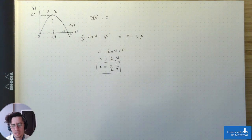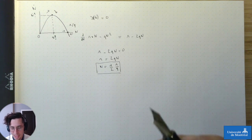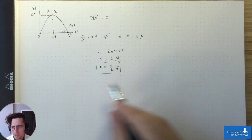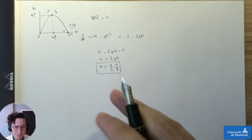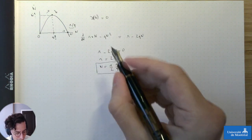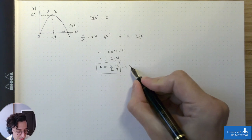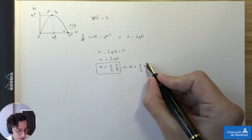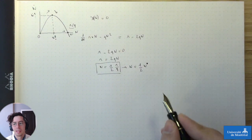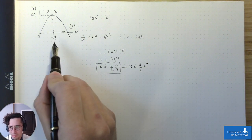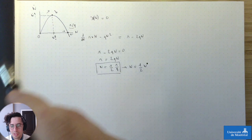Là, c'est le moment où on se dit : r/q, on connaît, c'est l'état d'équilibre n*. Donc on peut écrire que la croissance est maximum quand n = n*/2. Ce qu'on sait maintenant, c'est que quand on a la moitié de la taille de population maximum, on va avoir la croissance maximum.